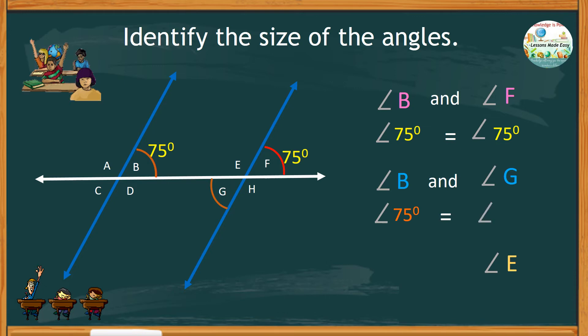Moving on to angle E. Both angles B and E are on the same side of the transversal, which means that they are co-interior angles.